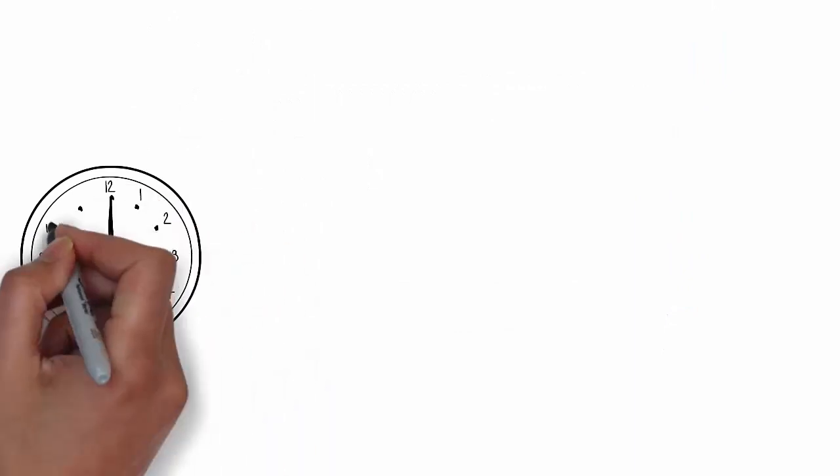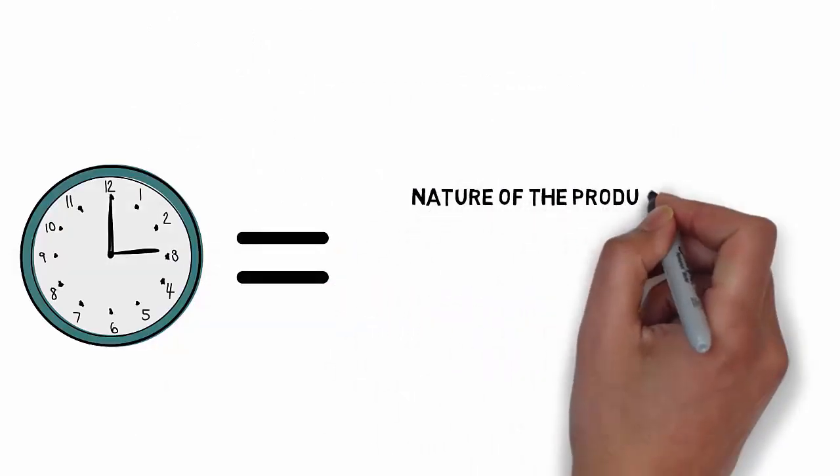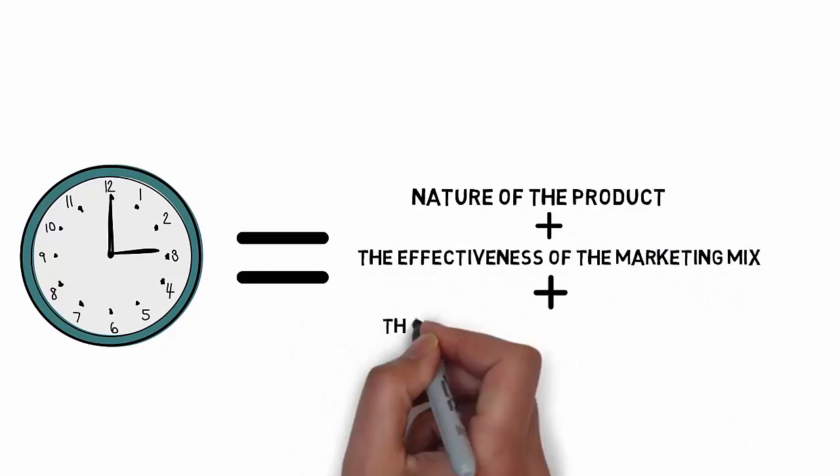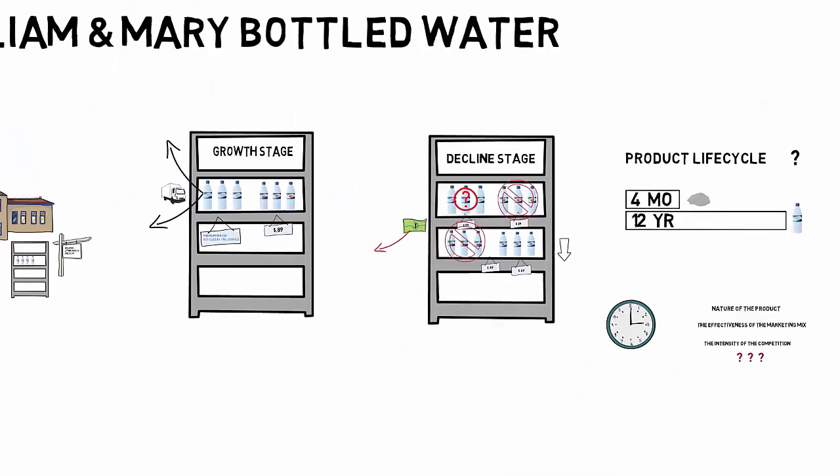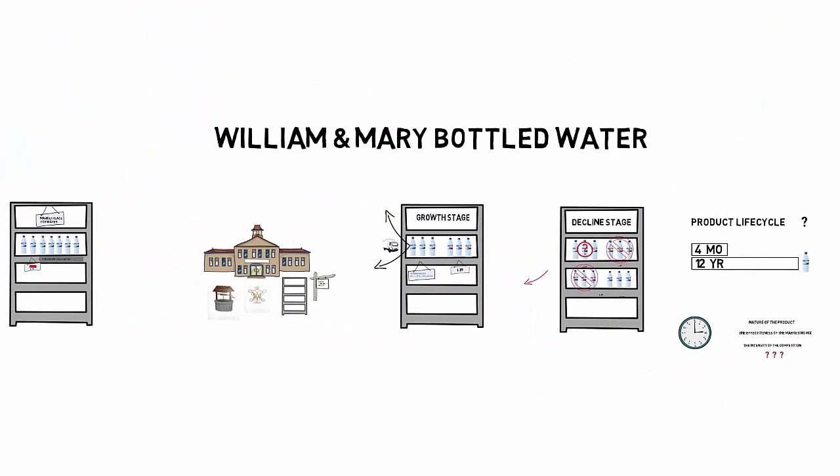Ultimately, the length of a product life cycle is dependent on the nature of the product, the effectiveness of the marketing mix, and the intensity of the competition. Thus, given the uncertain nature of the product life cycle, it is essential for organizations to understand and actively manage this cycle.